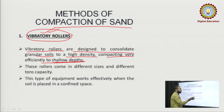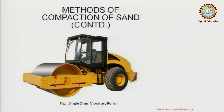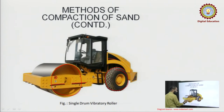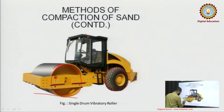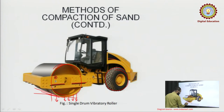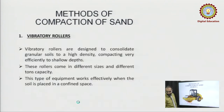Because a roller has a large round cylindrical part — as you can see in the diagram — the vibrations can reach into the ground only up to a certain extent. So generally it is only used for shallow depth. This type of equipment works efficiently when the soil is placed in a confined space.